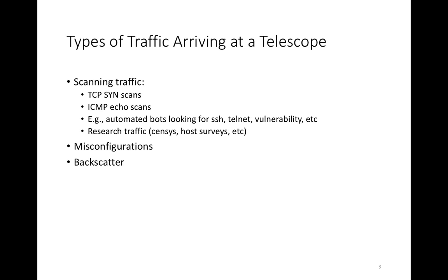Another type of traffic that arrives at telescopes is misconfiguration traffic. For instance, if someone misconfigures their server with an address other than the one they intended, or software itself has misconfigurations, these can cause traffic to arrive at the telescope. Finally, the third class of interesting traffic at telescopes is backscatter, which we'll talk about in a moment.